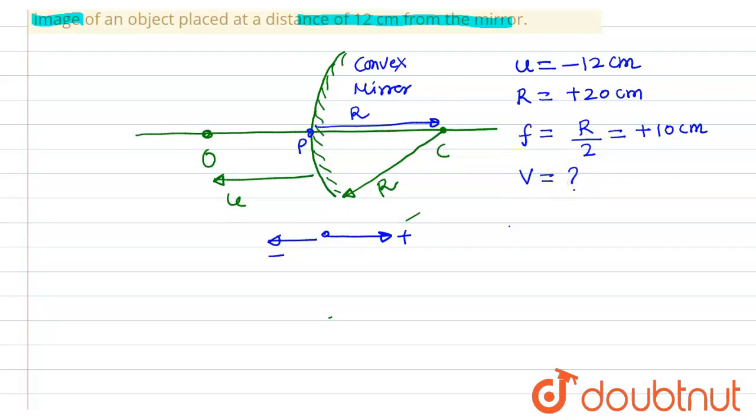So by mirror formula, 1 upon f equals to 1 upon v plus 1 upon u. So 1 upon plus 10 equals to 1 upon v plus 1 upon minus 12.